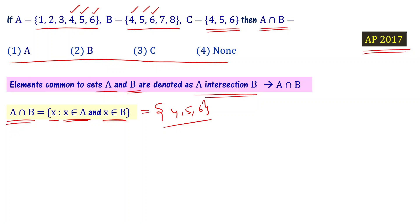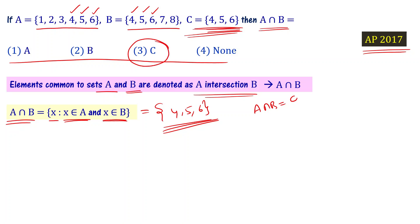So A intersection B = {4, 5, 6}. Now looking at set C, set C contains elements 4, 5, and 6. Therefore, A intersection B is equal to set C. Choice 3 is the right answer.